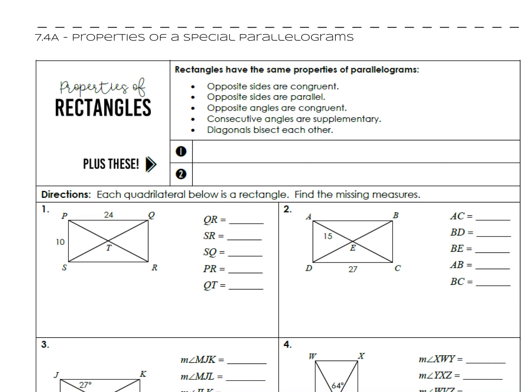So rectangles still have all of those properties of parallelograms, but now we're going to find that rectangles add two new properties to the mix which are just easy to use and hopefully just as easy to remember. The first of which, you might all know this already, all angles in a rectangle are 90 degrees.